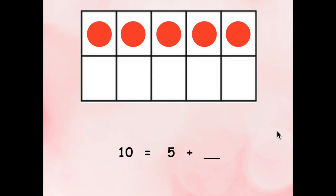What do I need to do to solve this problem? You're right. We need to count the empty spaces to see how many more counters we need. Let's count. One, two, three, four, five. We need five more counters.